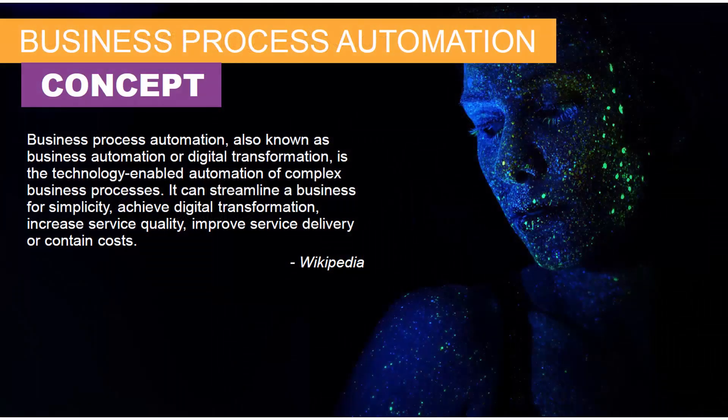Here's a quick definition of business process automation from Wikipedia. Business process automation, also known as business automation or digital transformation, is the technology-enabled automation of complex business processes. It can streamline a business for simplicity, achieve digital transformation, increase service quality, improve service delivery, and or contain costs.